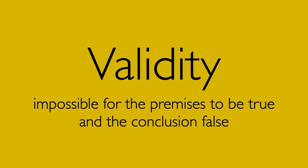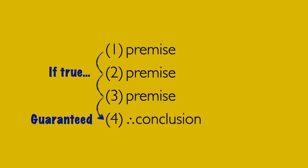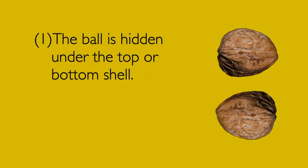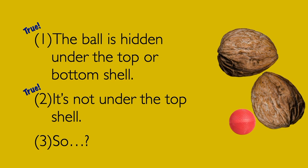Now we're ready for our definition. A valid argument is built so that it is impossible for the premises to be true and the conclusion false — it just can't happen. Because validity is about structure, or as we say in logic, form. If we assume the premises are true, the form of a valid argument forces the conclusion to be true. Let's play a shell game. The ball is hidden under the top or bottom shell. It's not under the top shell. Is it good reasoning to conclude the ball is under the bottom shell? If it really is true that the ball is hidden under the top or bottom shell, and if it really is true that it's not under the top shell, then it's got to be under the bottom shell. Your brain recognizes the form of this argument — it's a structure that guarantees the conclusion to be true, as long as the premises are true. It's valid.